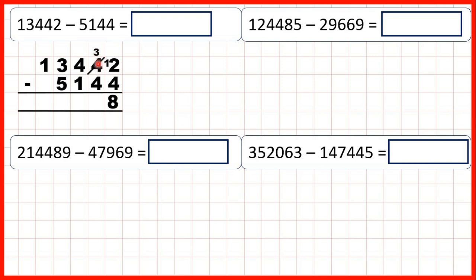Now onto our tens column. Because we exchanged, we have 3 minus 4, but 4 is larger than 3. So again we need to go to the left, one less, one in front, and that gives us 13 minus 4, which is 9.